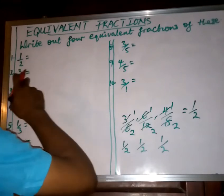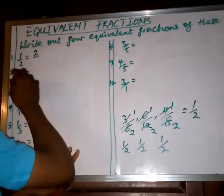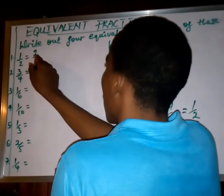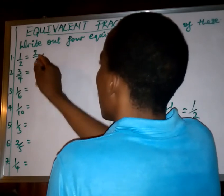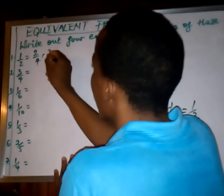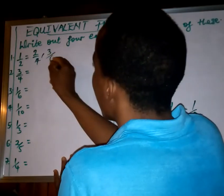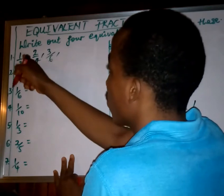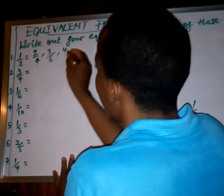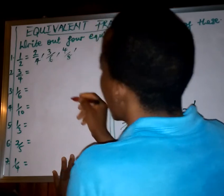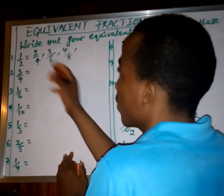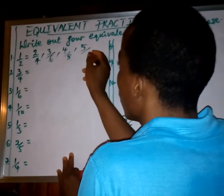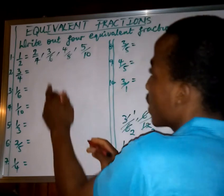So the first equivalent fraction of 1 over 2: multiply by 2 — 2 times 1 is 2, over 2 times 2 is 4, giving 2 over 4. Next, multiply by 3 — 3 times 1 is 3, over 3 times 2 is 6, giving 3 over 6. Multiply by 4 — 4 times 1 is 4, over 4 times 2 is 8, giving 4 over 8. Multiply by 5 — 5 times 1 is 5, over 5 times 2 is 10, giving 5 over 10.